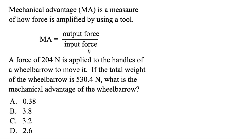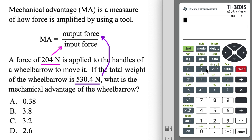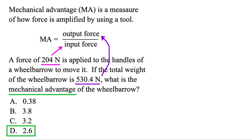You could be given a formula to use like this. A force of 204 Newtons is applied to the handles of a wheelbarrow to move it. Is this the input force or the output force? Notice that this is what we're applying, so that's going to make it the bottom number — the input. Next, the total weight of the wheelbarrow is 530.4 — that has to be the other number, so it goes up top because that's what we're moving — that's the output. Let's use the calculator and set up a fraction: 530.4 on top, 204 on the bottom, giving us 2.6. So that's the mechanical advantage.